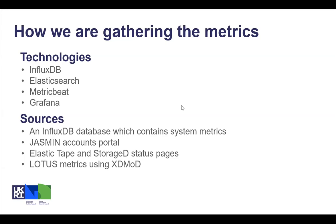Just a few of the sources that we've got: there's an InfluxDB instance which contains some of the system metrics. We're also getting some information from the Jasmine accounts portal, the elastic tape and storage D status pages, which is our tape technology. And we're also getting some Lotus metrics from software called XDMoD.